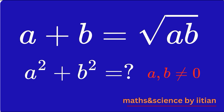The condition is that the values of variables a and b are not equal to 0. What we have to find is a² + b². What is given is only a single equation: a + b = √(ab). We have to solve for a² + b² when a and b are not equal to 0.